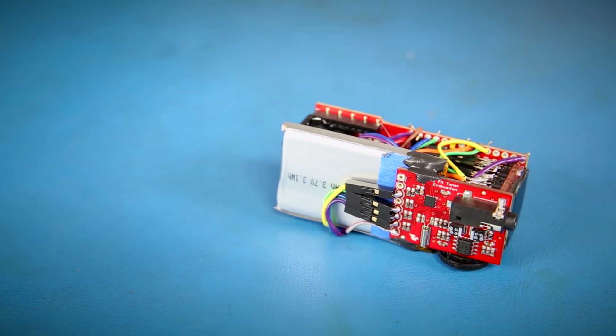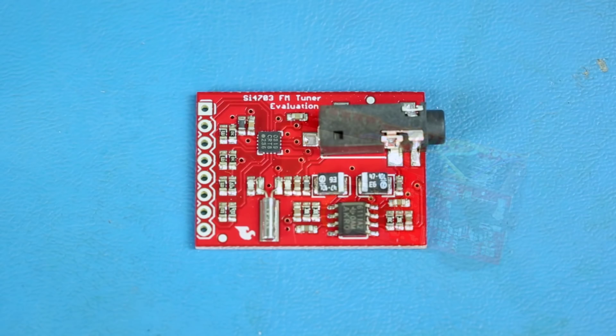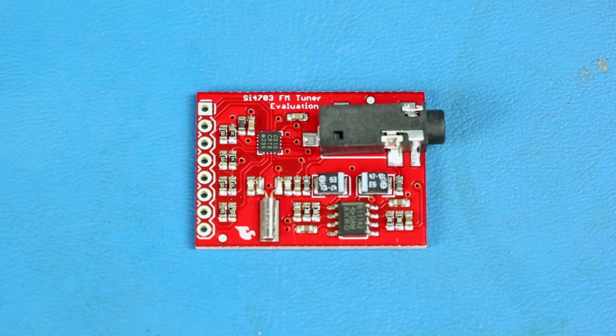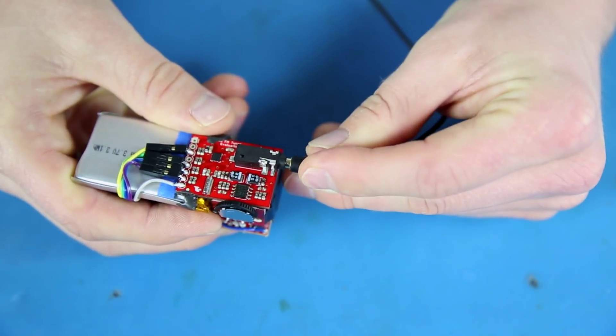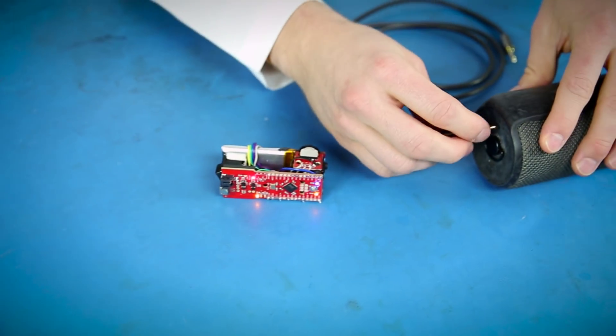So we put together this FM stick, which is based on the SI4703 evaluation board. The SI4703 allows you to tune into an FM station and listen to it. In this case, the board has a built-in headphone jack, so you can plug in some headphones, and it uses that wire as an antenna.